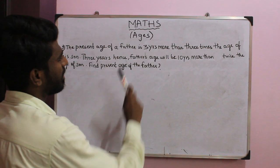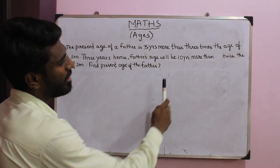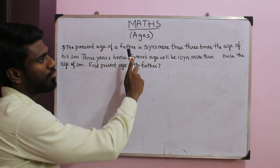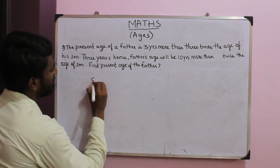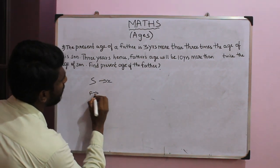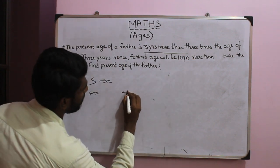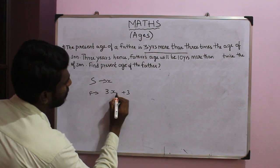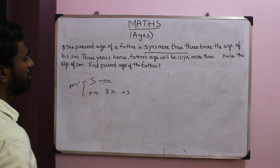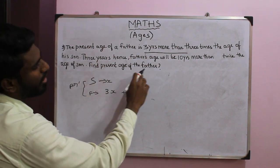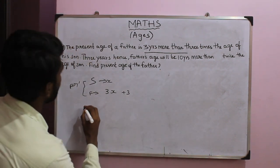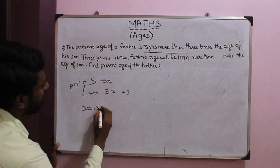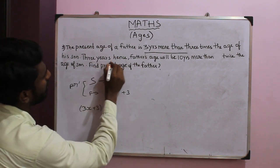Problem 3: The present age of a father is 3 years more than 3 times the age of his son. After 3 years, the father's age will be 10 years more than twice the age of his son. Find the present age of the father. Let the son's present age be x. Then the father's present age is 3x plus 3. After 3 years, father's age becomes 3x plus 6 and son's age becomes x plus 3.